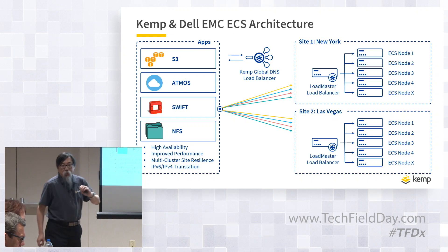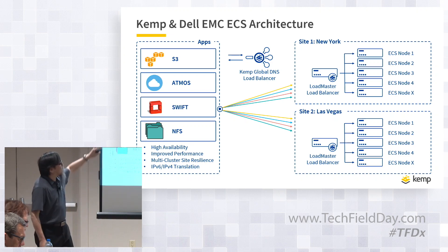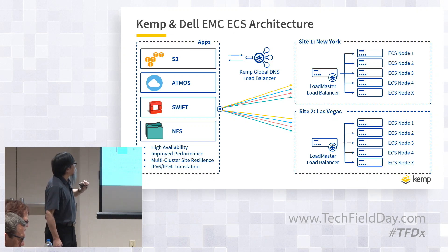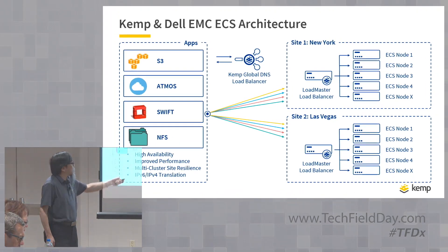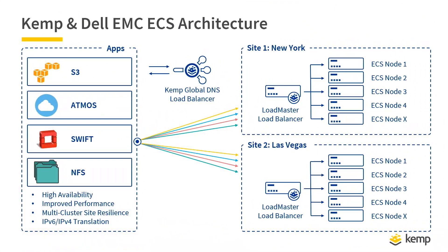Going back to this reference architecture we showed again, just so everybody's on the same page. We have these two sites: Site 1, New York, and Site 2, Las Vegas. We also have this global DNS load balancer sitting in the middle here.